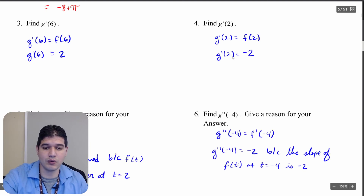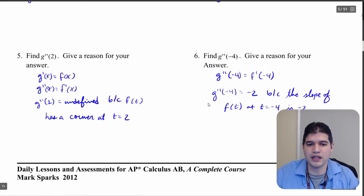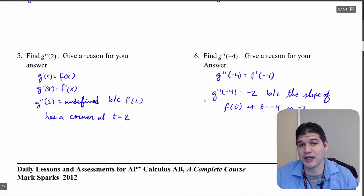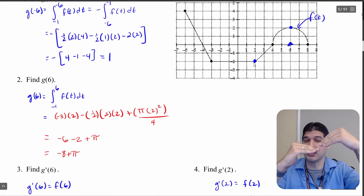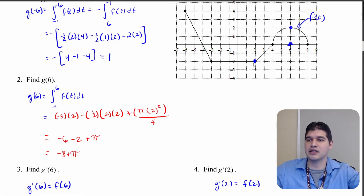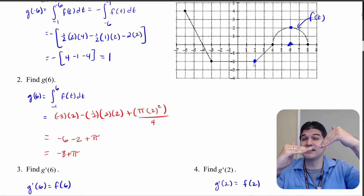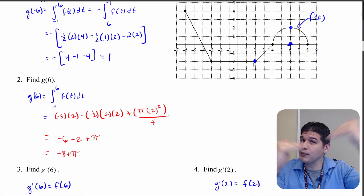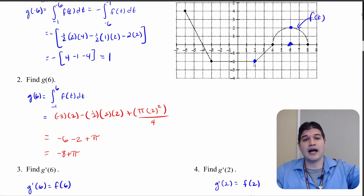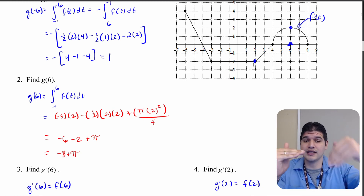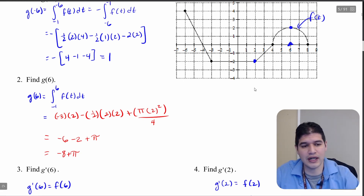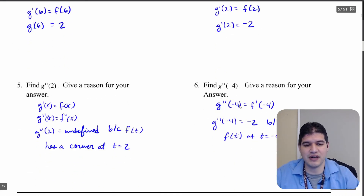For g double prime of 2, I need f prime of 2. Looking at the graph, f has a corner or cusp at t equals 2 — the slope on the left side is not equal to the slope on the right side. Since derivatives and limits are connected, the left-hand limit does not equal the right-hand limit, so g double prime of 2 is undefined because f of t has a corner at t equals 2.